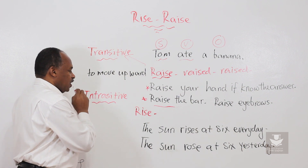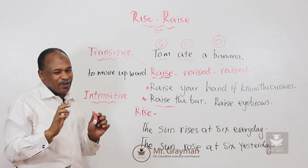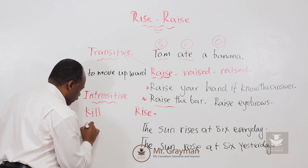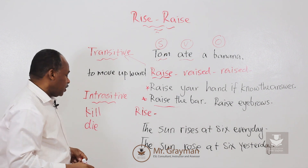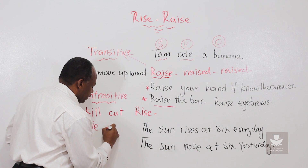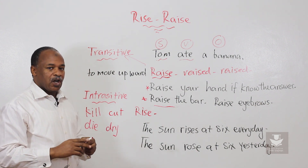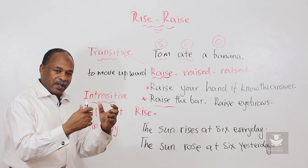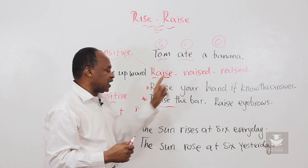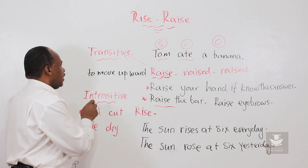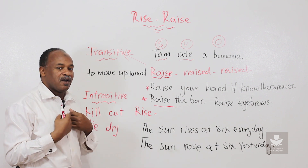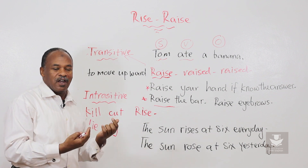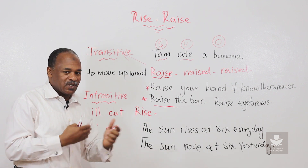And then we have the intransitive. Let me give you another example — not a very nice example but I have to go for it. If you look at these two verbs: kill and die, or cut and dry. If somebody killed your animal, somebody is the subject, your animal is the object, and 'kill' is the verb — so this is transitive. While 'die' — if I say 'my cat died,' that's complete sense. You're not going to say 'who died it?' That doesn't exist in English.